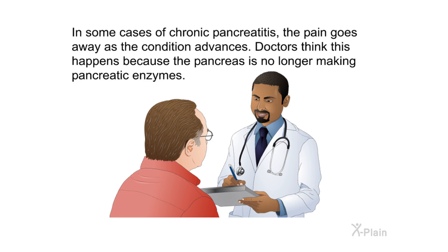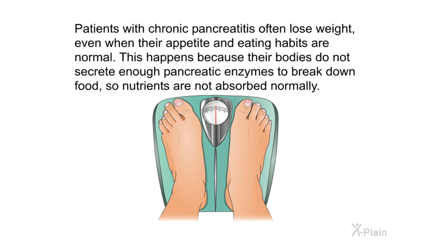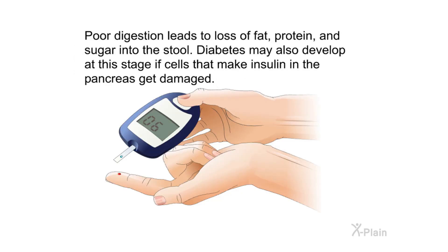In some cases, the pain goes away as the condition advances — doctors think this happens because the pancreas is no longer making pancreatic enzymes. Patients with chronic pancreatitis often lose weight even when their appetite and eating habits are normal, because their bodies do not secrete enough pancreatic enzymes to break down food, so nutrients are not absorbed normally. Poor digestion leads to loss of fat, protein, and sugar into the stool. Diabetes may also develop if cells that make insulin in the pancreas get damaged.